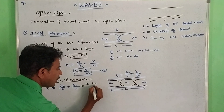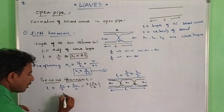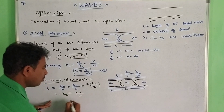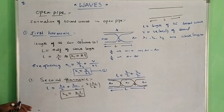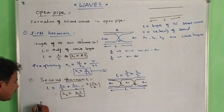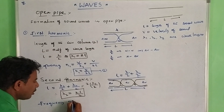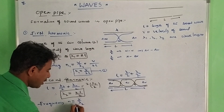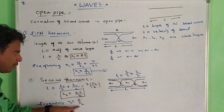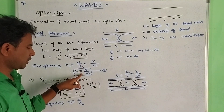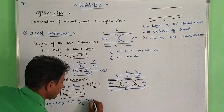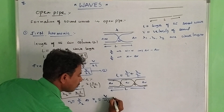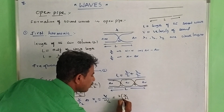The frequency for the second harmonic: N = V / lambda. So N2 = V / lambda 2. Since lambda 2 = 2L / 2, substituting gives N2 = 2 × (V / 2L).